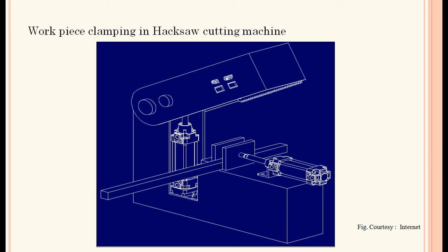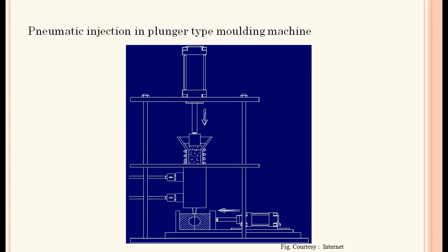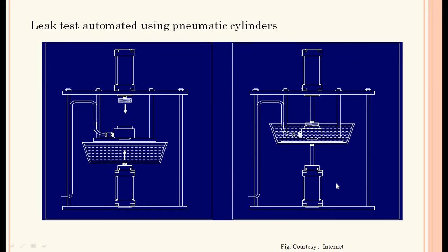Workpiece clamping in a hacksaw cutting machine — this is the hacksaw cutting machine with the saw tooth, and the clamping and declamping is carried out with the help of a pneumatic cylinder. The rod is extended and the rectangular cross-sectional bar is fixed in the hacksaw table. Pneumatic injection in a plunger-type molding machine — a pneumatic cylinder presses the raw material through an injector into the mold cavity, and another cylinder is used to clamp the cavity.